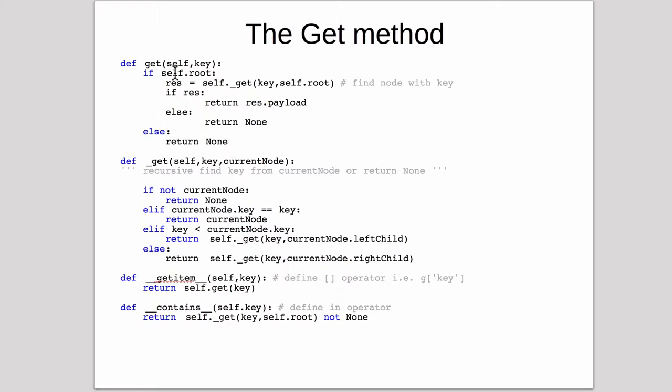That's the main get method. The recursive call works by first checking if the current node is none, it returns none. So if we've recursed to a child that's set to none, it just returns none. Else if the current node is equal to the key, we've found what we're looking for, we just return the current node.